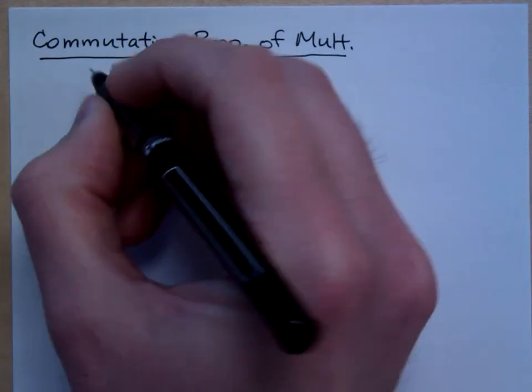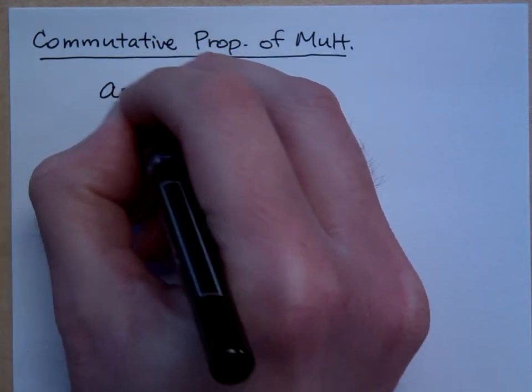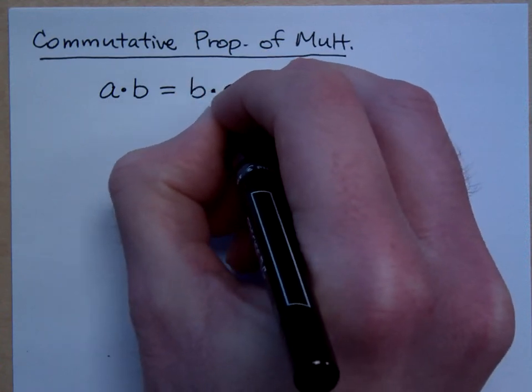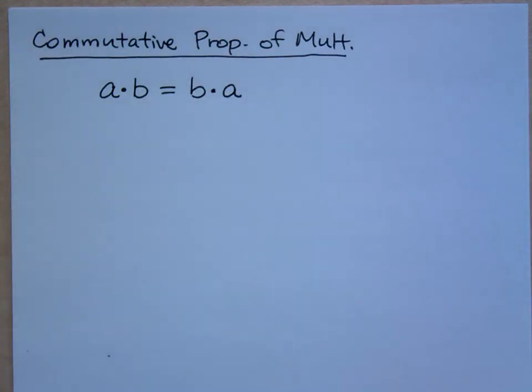Now, the commutative property says that if you have A times B, that's the same thing as having B times A. If you flip the order of the factors, your answer is the same. Just like with adding, if you flip the order of the addends, the answer is still the same.